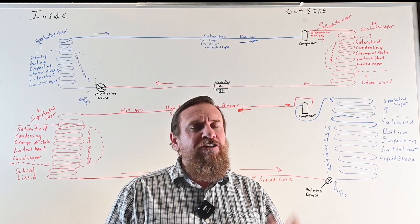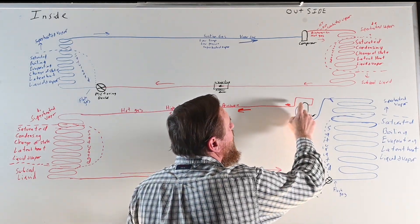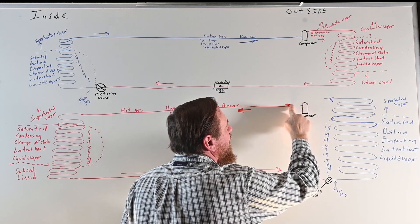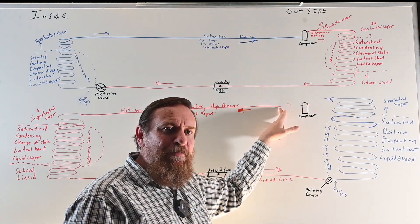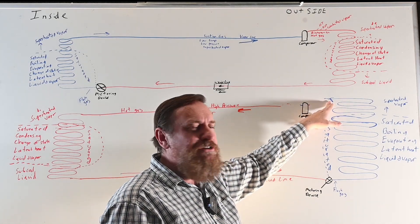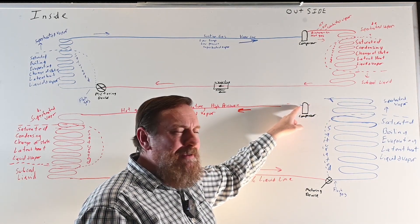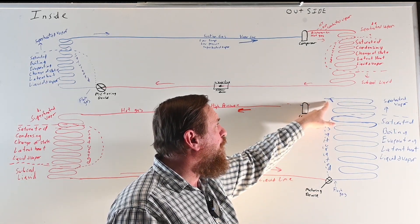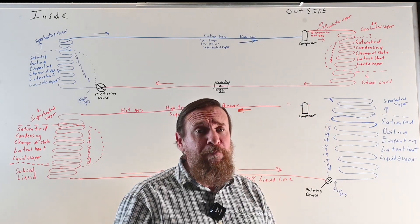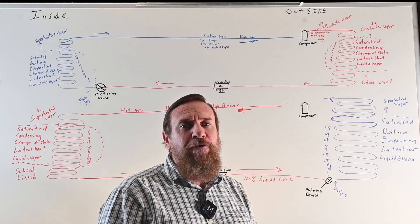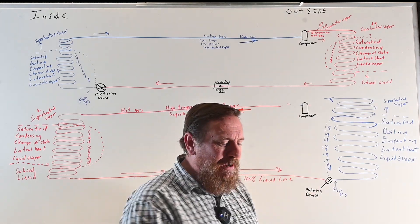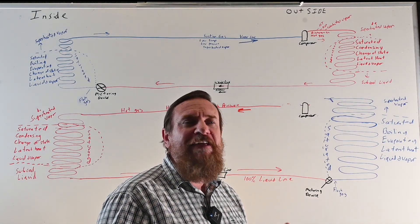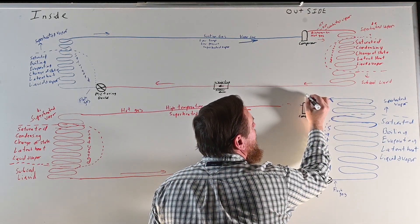I'm glad you asked because there is a better way. We just need to add a few simple components. We erase these two pipes and notice we have high pressure vapor here and low pressure vapor here from the system — four pipes total from the compressor. We're going to need a valve called a four-way reversing valve. It's going to connect those four pipes and simply reverse the direction of that vapor.